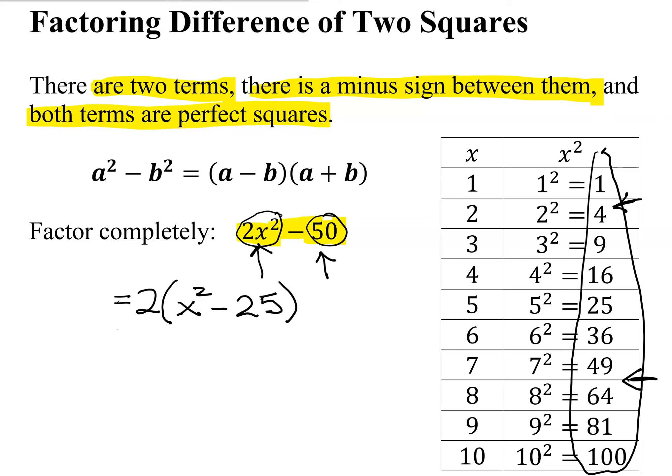So now if I look at my resulting binomial here, it has no common factors left. So this is the point at which you ask yourself, is it the difference of two squares? There are definitely two terms. There's a minus in between the two terms. And is this a perfect square? Yes. Is 25 a perfect square? Yes.